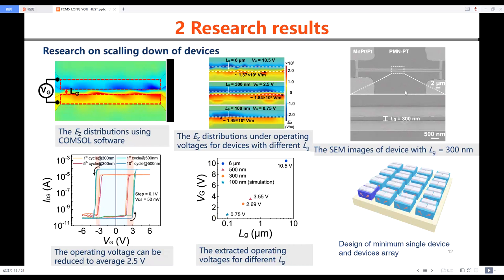Then we fabricated the devices with different LG. When LG is 500 nm, the operating voltage averages 3.5 volts. While when LG is 300 nm, the operating voltage can be reduced to about 2.5 volts, which are consistent with the simulation results.